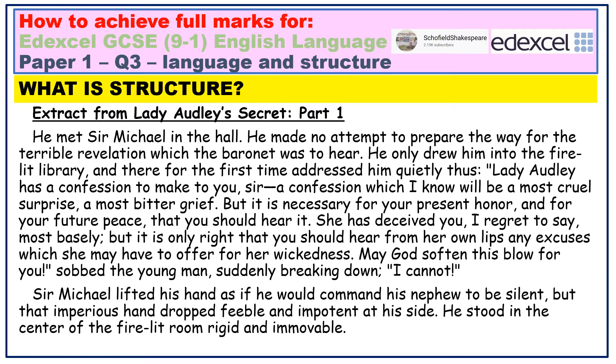Just to explain the background: he is Robert Audley, Sir Michael Audley's nephew. He has found out that his uncle Sir Michael has married bigamously. In this extract, Robert forces Sir Michael's bigamous wife Lady Audley to tell her husband the truth about her past.